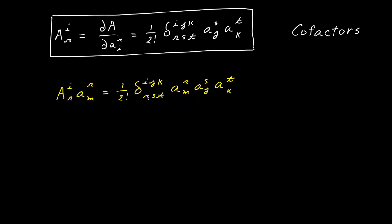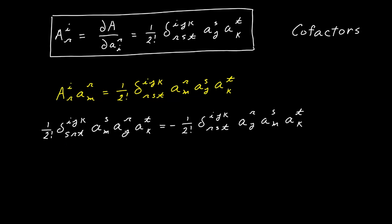Next, I'm going to switch the indexes S and R, and of course doing that will cause the expression to become negative. Then I'm going to change the order of these two factors, and that does not change the sign because multiplication is commutative. Now observe that this expression is the same as this one except this one is negative and the order of this index and this index have been swapped. So what that tells us is that switching the order of index M and J causes the expression to become negative. In other words, this expression is anti-symmetric with respect to indexes M and J.